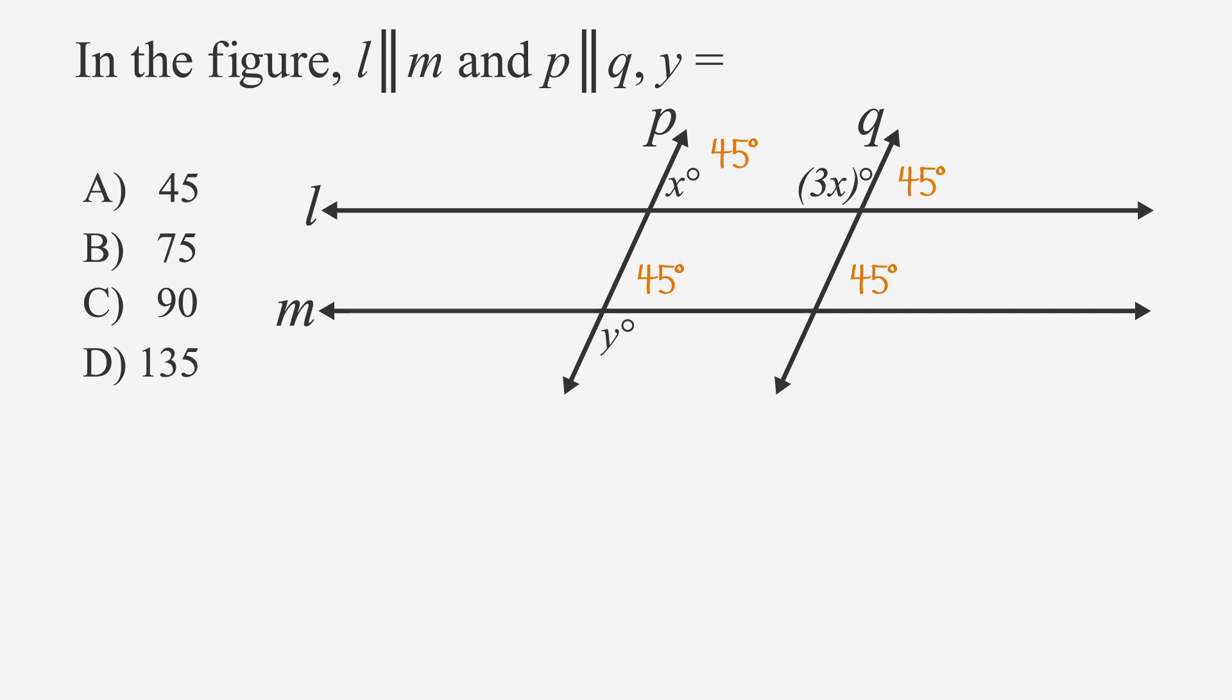Now, looking at the bottom intersection, the angle above Y corresponds with X, which means that Y corresponds with angle 3X. Since X is 45 degrees, 3X, or 3 times 45, is 135 degrees.